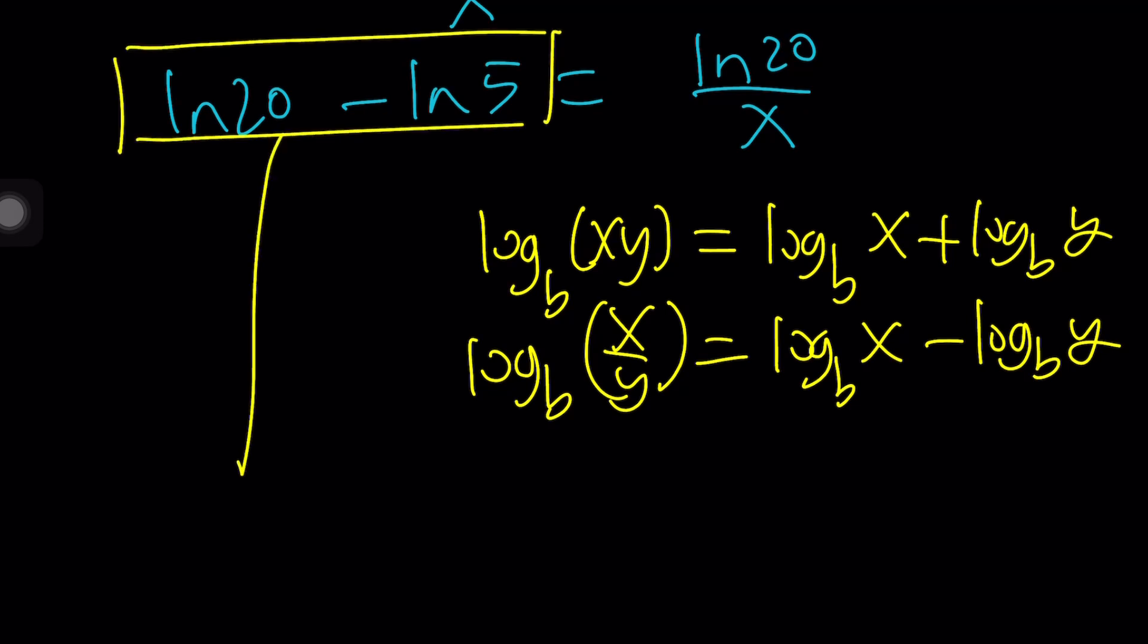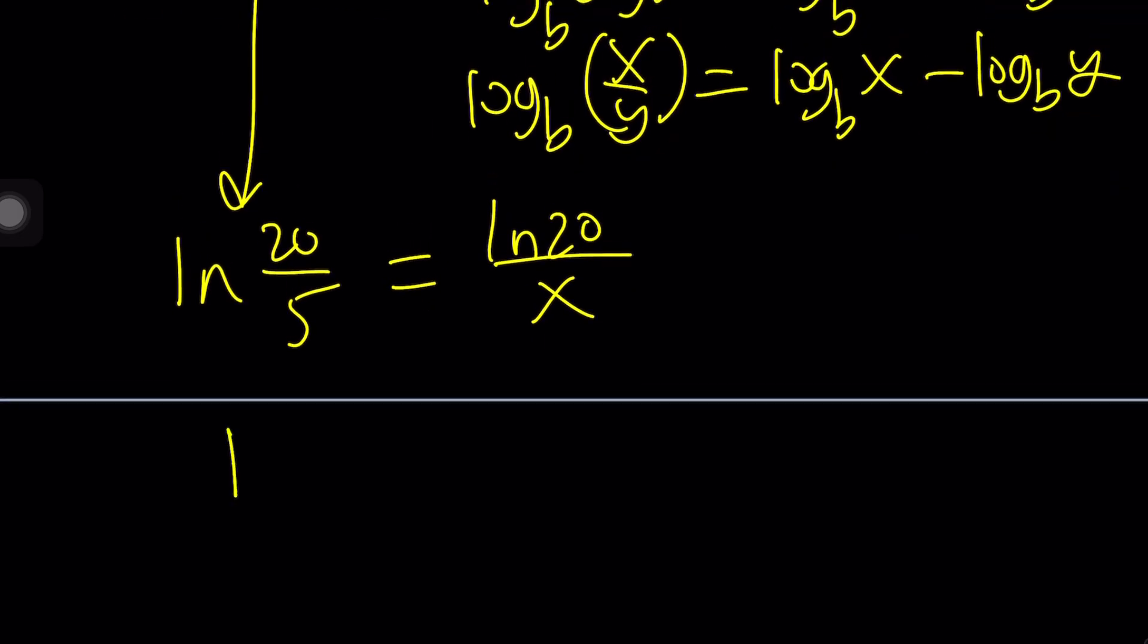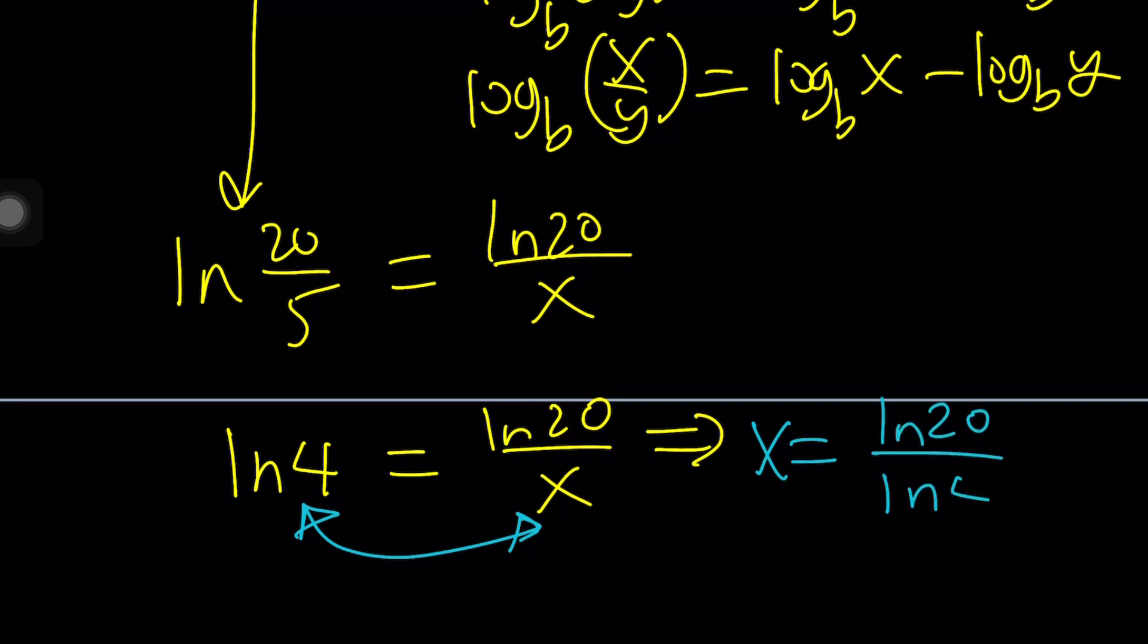So now, we can go ahead and write this as ln 20 over 5 equals ln 20 all over x. 20 over 5 is 4, so that's going to be ln 4 equals ln 20 over x. And this is not the end of it because we were trying to solve for x. So kind of switch these around. A lot of times when people are trying to solve these equations, they're going to multiply or cross-multiply, multiply both sides by x and then divide by ln 4. You don't really need to do that. All you can do is, because these two are always multiplied, just switch them around. And from here, you're going to get x equals ln 20 divided by ln 4. You see how quick that is?